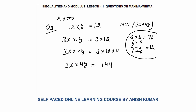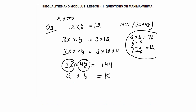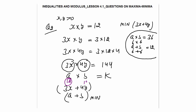The product of two numbers, 3x and 4y, is constant at 144. Their sum — that is 3x + 4y — is minimum when the numbers are equal. Equal numbers whose product is 144 must each be 12. So 3x = 12 and 4y = 12.